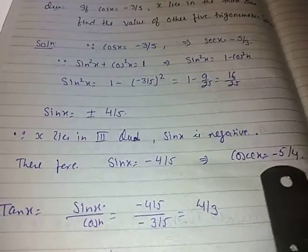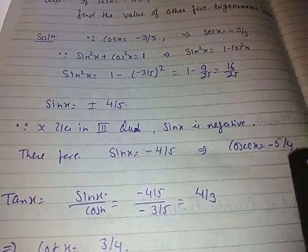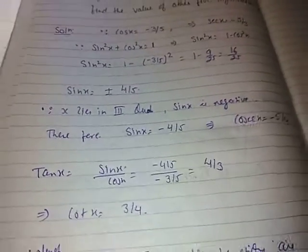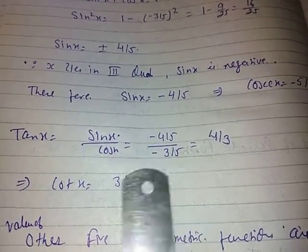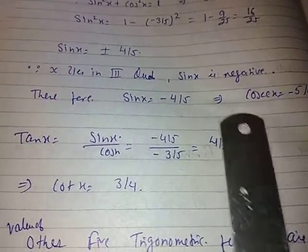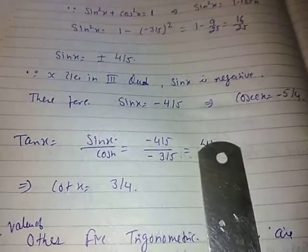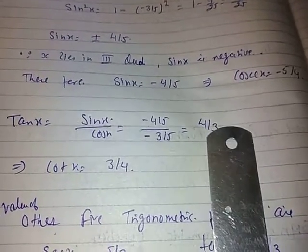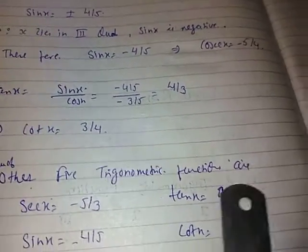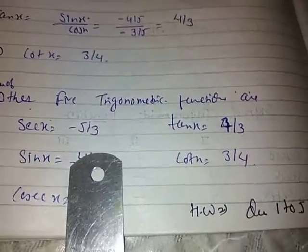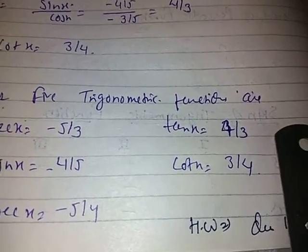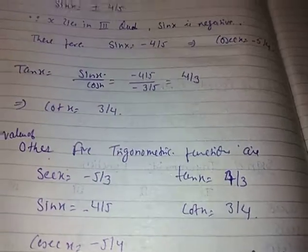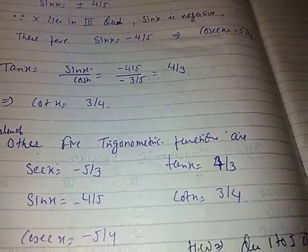If sin x = −4/5, then cosec x = −5/4. And tan x = sin x / cos x = (−4/5)/(−3/5) = 4/3. Since tan is positive in the third quadrant, this is consistent. Cot x = 3/4, the reciprocal of tan x. Therefore the values of the other five trigonometric functions are: sec x = −5/3, sin x = −4/5, cosec x = −5/4, tan x = 4/3, cot x = 3/4. This is how you solve questions 1 to 5 of exercise 3.2.